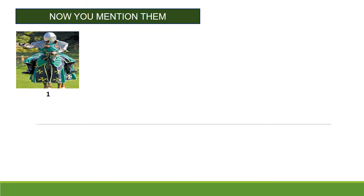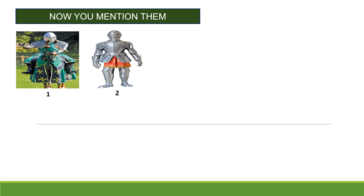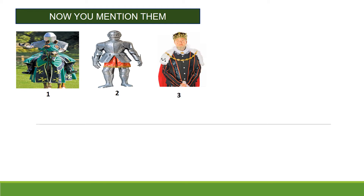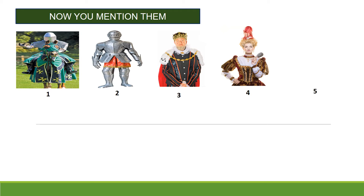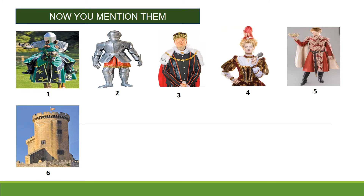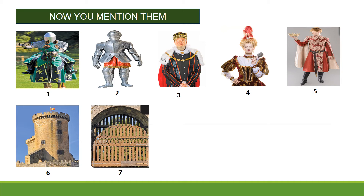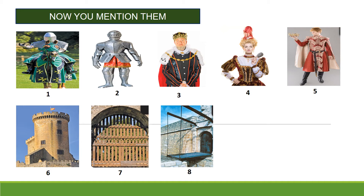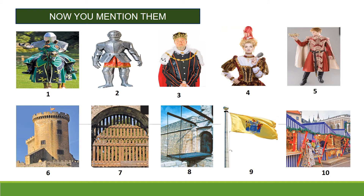Now, you mention them. Number one — knight. Number two — armour. Excellent. Number three — that's a king. Number four — queen. Very good. Number five — prince. Number six — tower. Number seven — gate. Number eight — that's a drawbridge. Number nine — flag. And number ten — market. Excellent, girls.